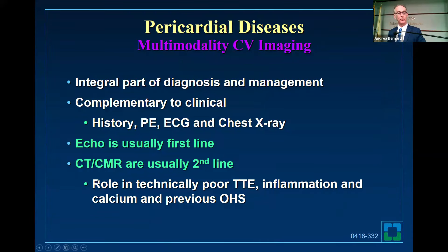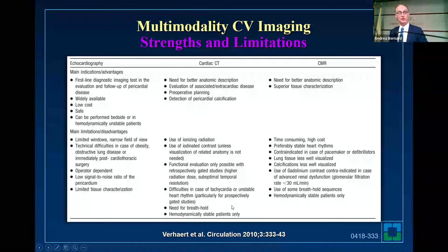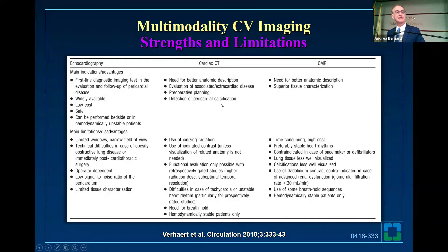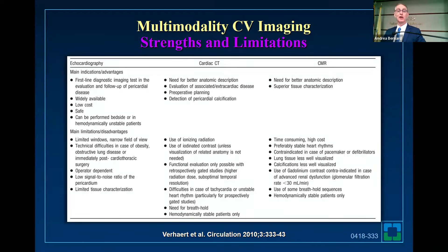Echo is always the first line — actually clinical exam is first, then echo, then you can consider CT or MRI. Second line, you do those other tests when you have a bad echo, when you're looking for inflammation or calcium, or if they've had previous open heart surgery. The pros and cons of multimodality: echo is always first line, low cost, you can do it with handheld echo, but disadvantages if the patient is obese or has tough windows. CT is very good at looking for calcium and pre-op planning, but you are getting radiation. MRI is very good for tissue characterization, but telling an obese, claustrophobic patient with a pacemaker and renal insufficiency to get into a closed scanner is very difficult. You could also throw in PET scanning — the FDG gets taken up by the pericardium as well.